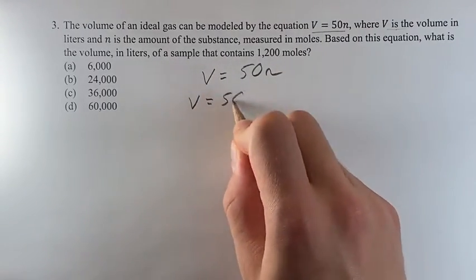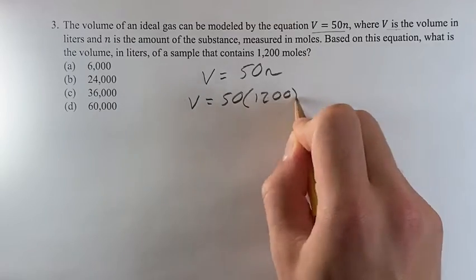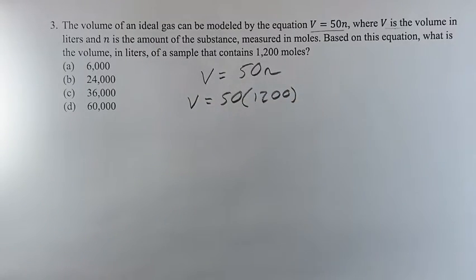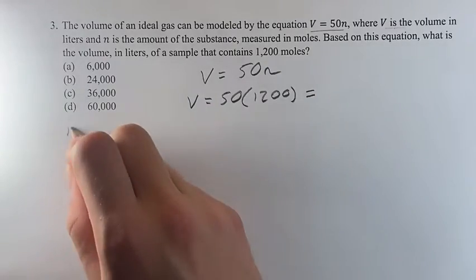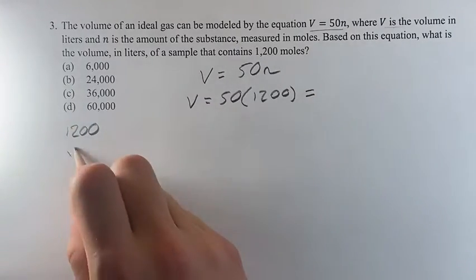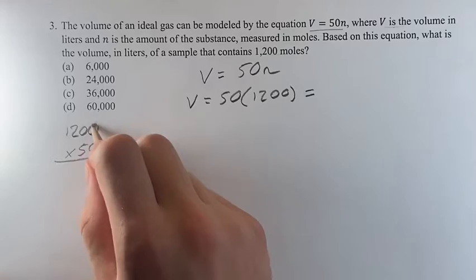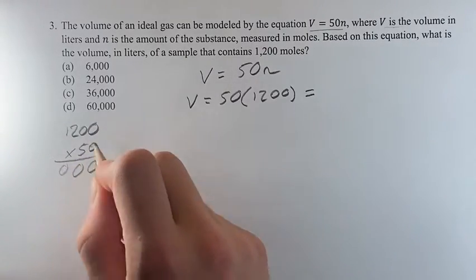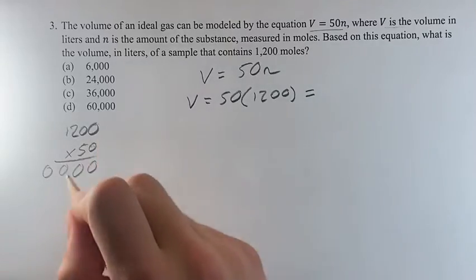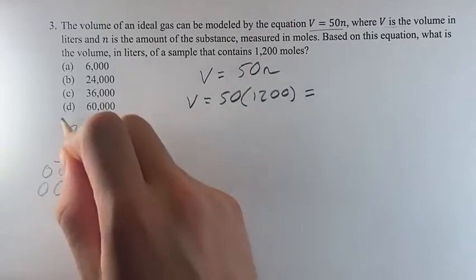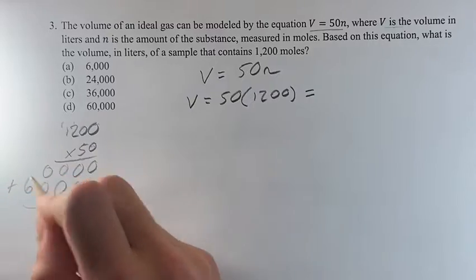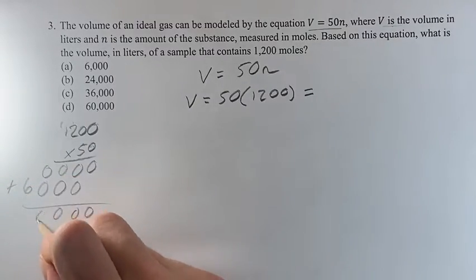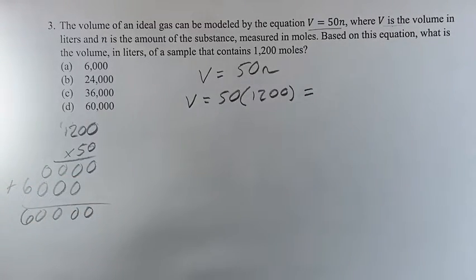So we plug in 1200, and literally all we have to do is multiply these two and we'll get our value for v. You can use tricks with counting the zeros and then adding the coefficient on the front, but for simplicity's sake I'll just do it normally. That is how you multiply the two.